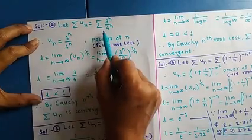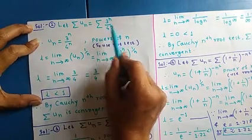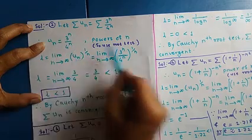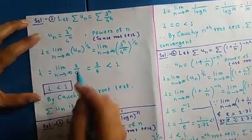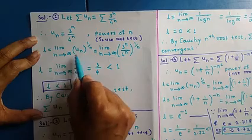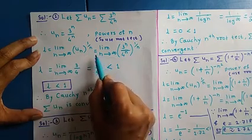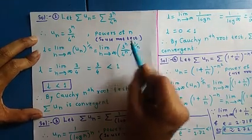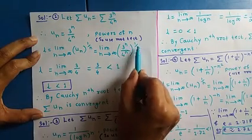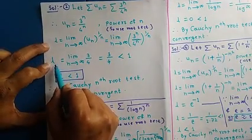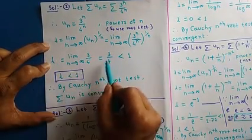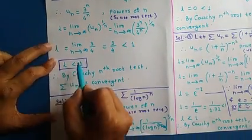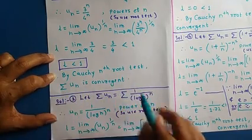Example 2: Σ u_n = Σ 3^n / 4^n. Since u_n involves powers of n, we apply the root test. We compute l = lim(n→∞) (3^n / 4^n)^(1/n). The powers cancel, giving l = lim(n→∞) 3/4 = 3/4. Since 3/4 < 1, by Cauchy's nth root test the series is convergent.